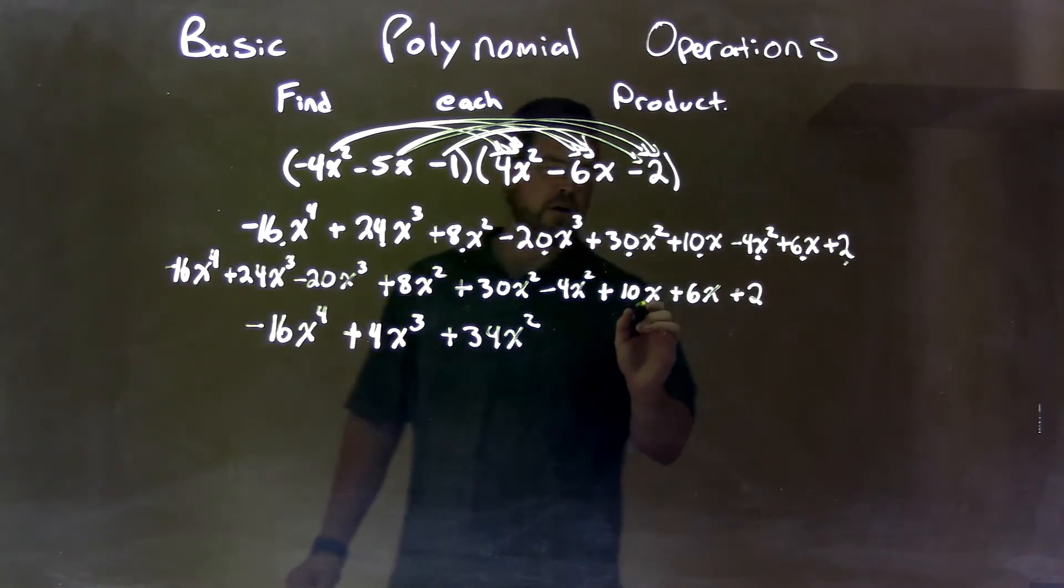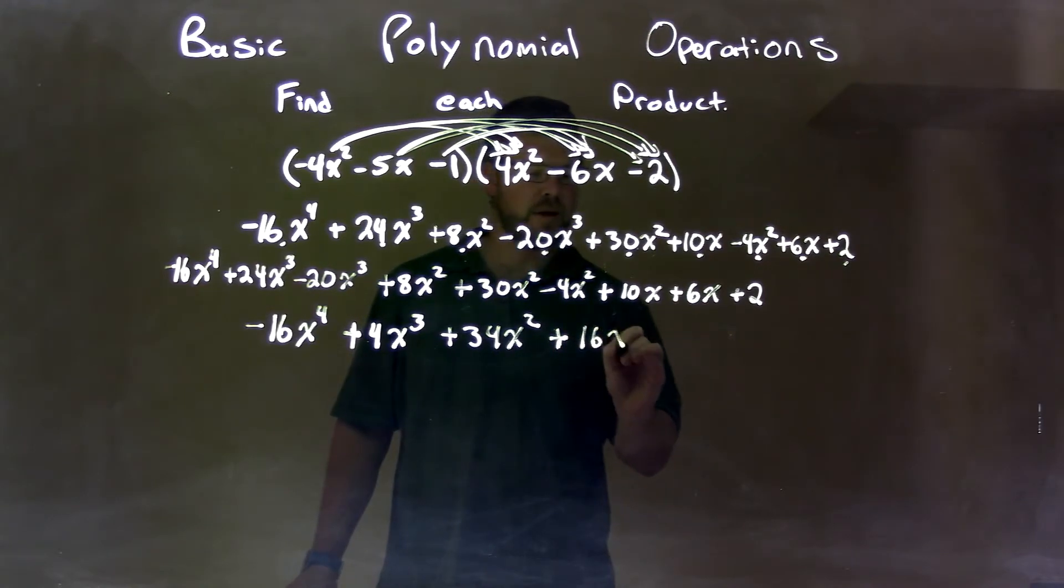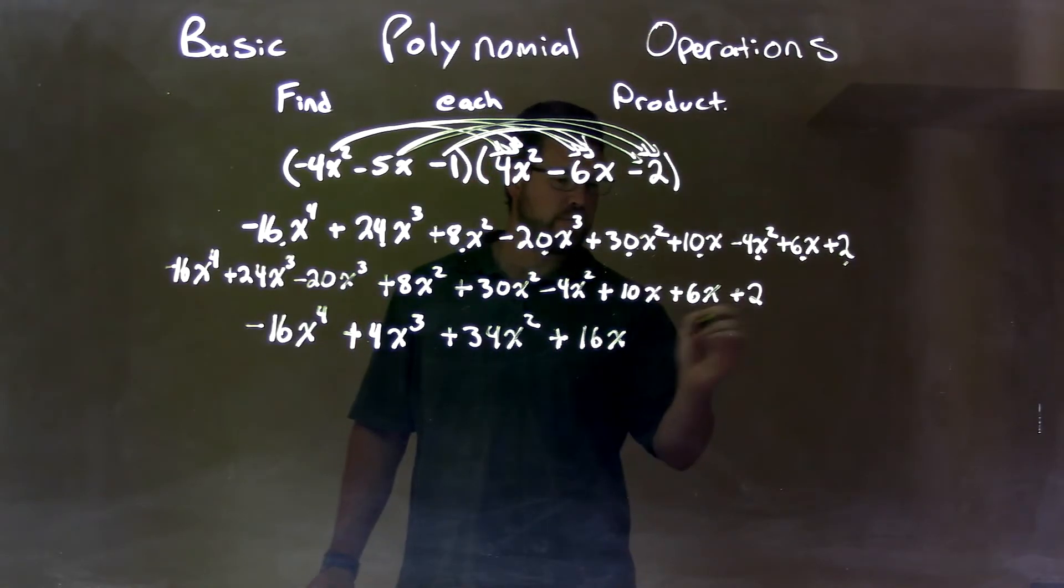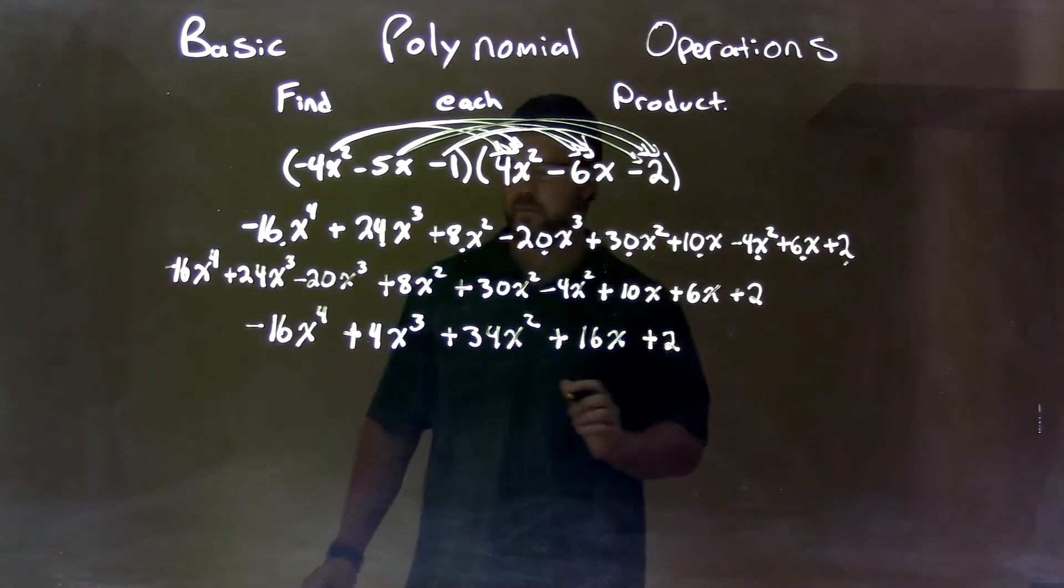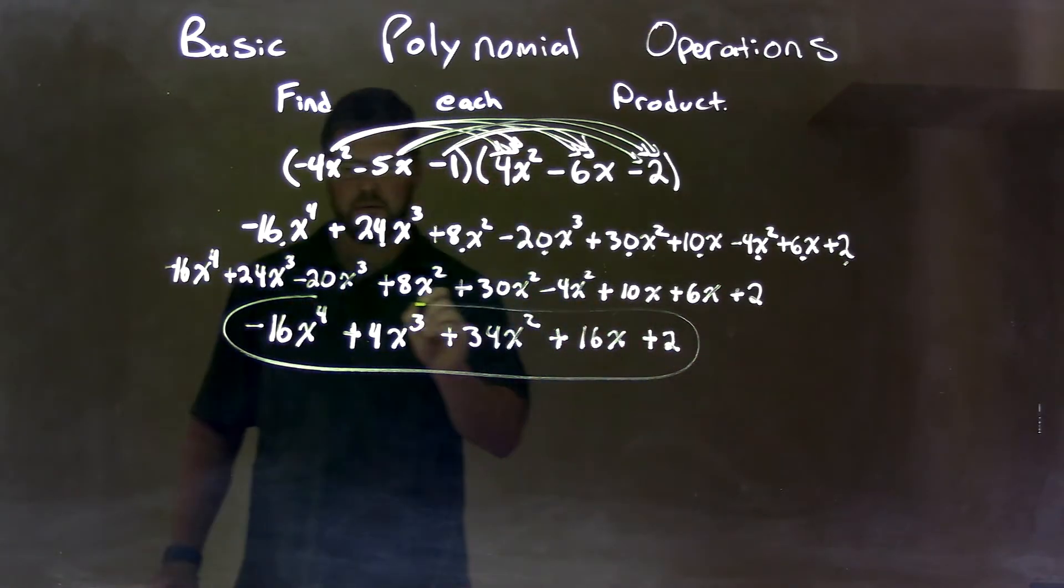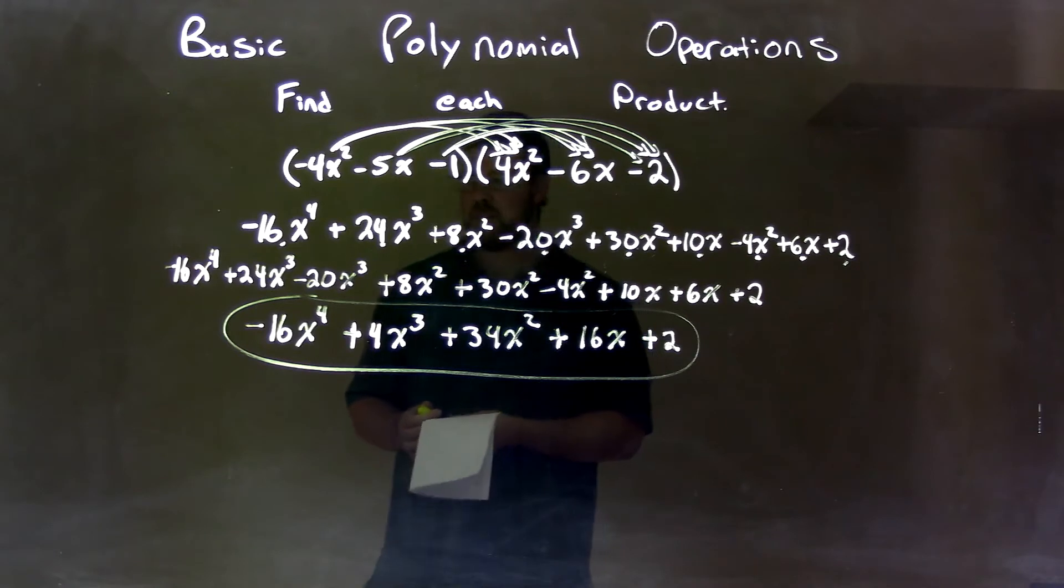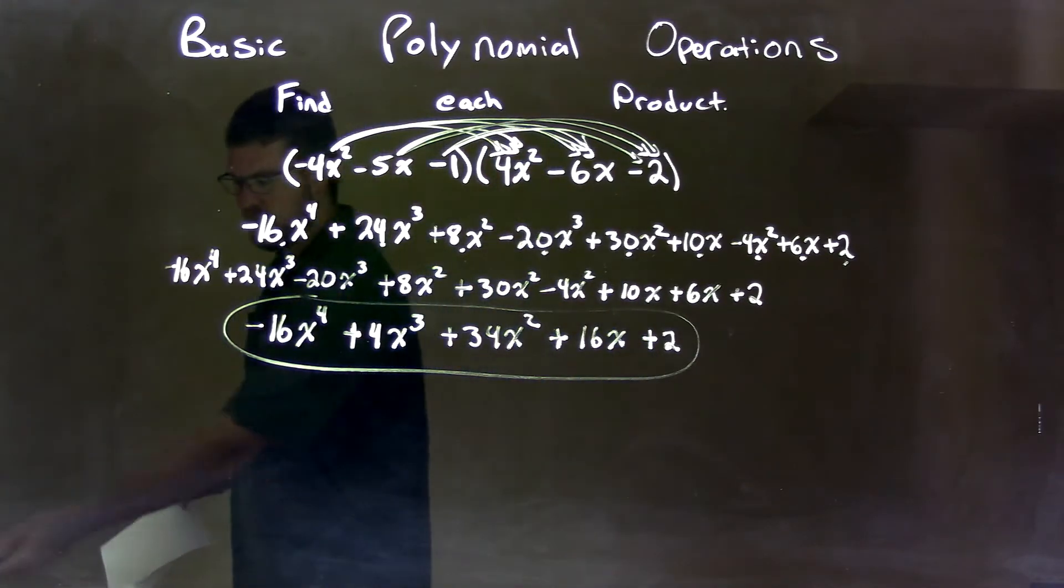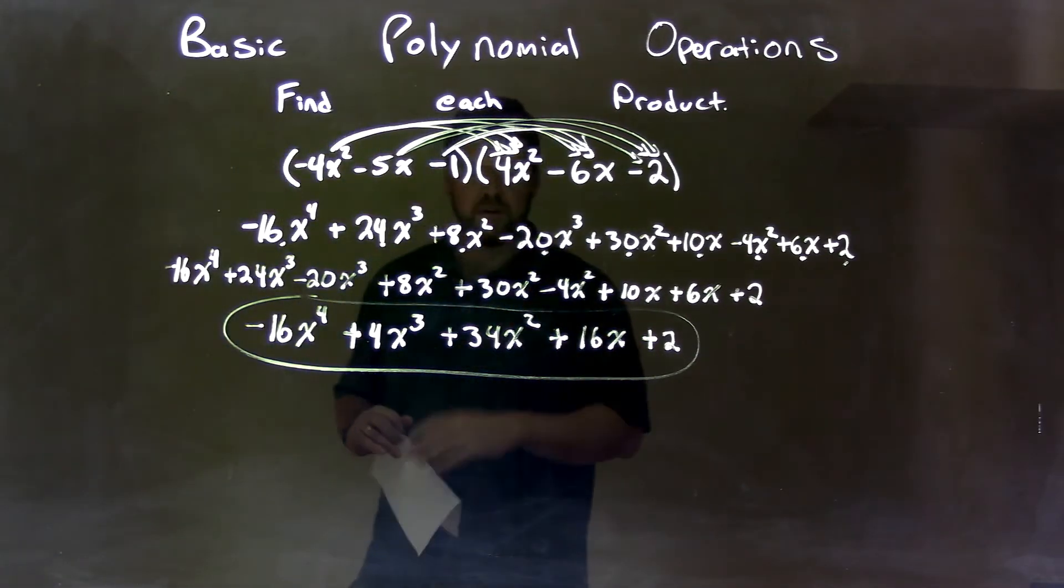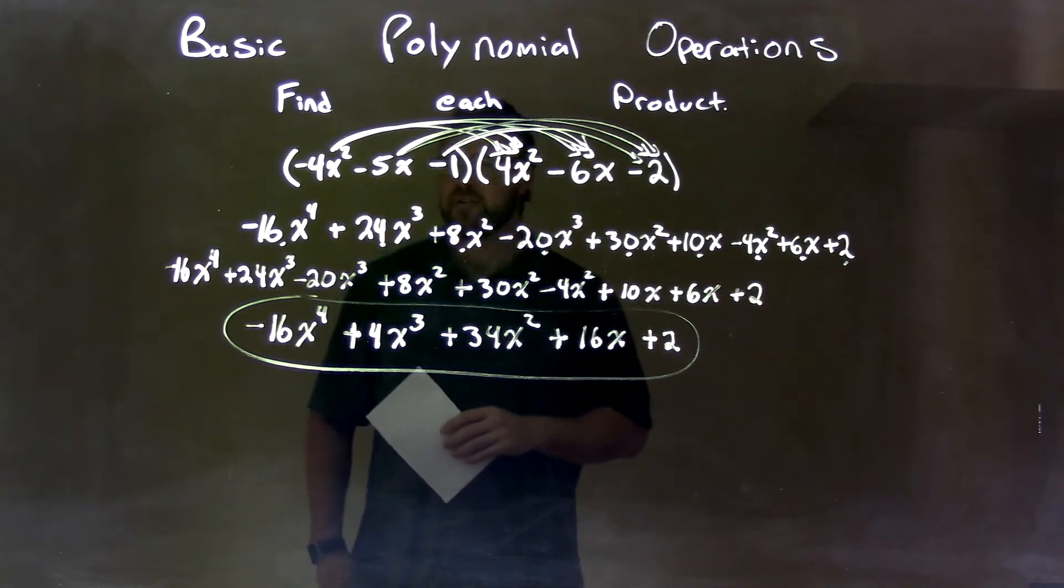Next, we combine our x's. We have 10x and 6x. That's just 16x. So it's 16x right here. And then we have just a plus 2 that comes down. So our final answer here is negative 16x to the fourth plus 4x to the third plus 34x squared plus 16x plus 2.